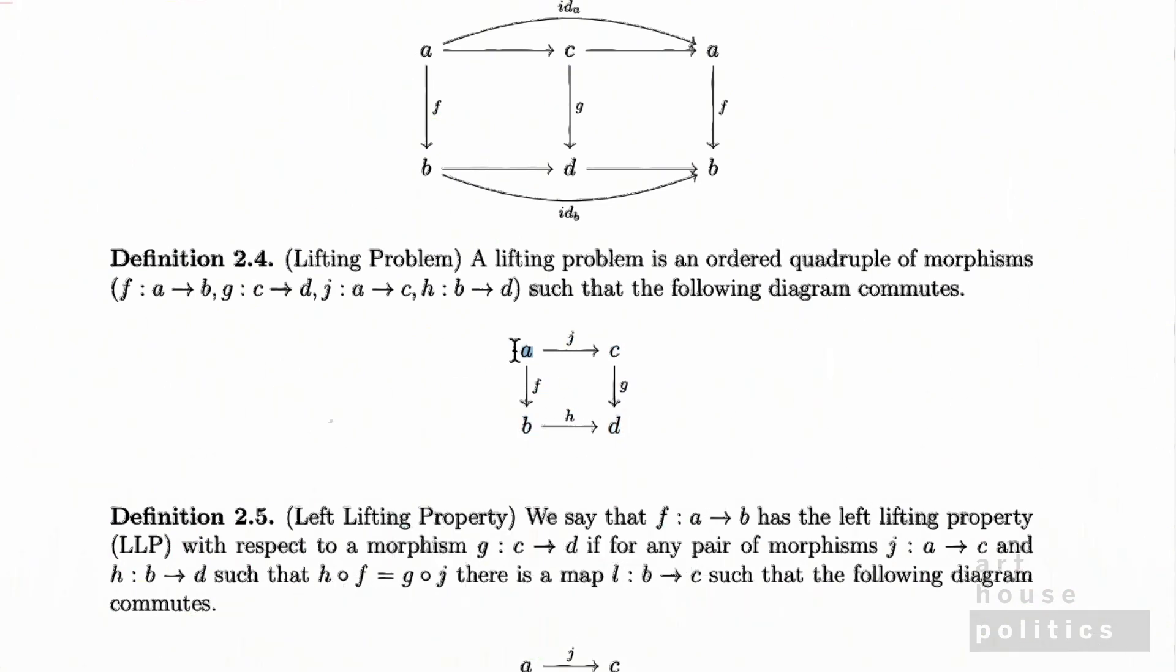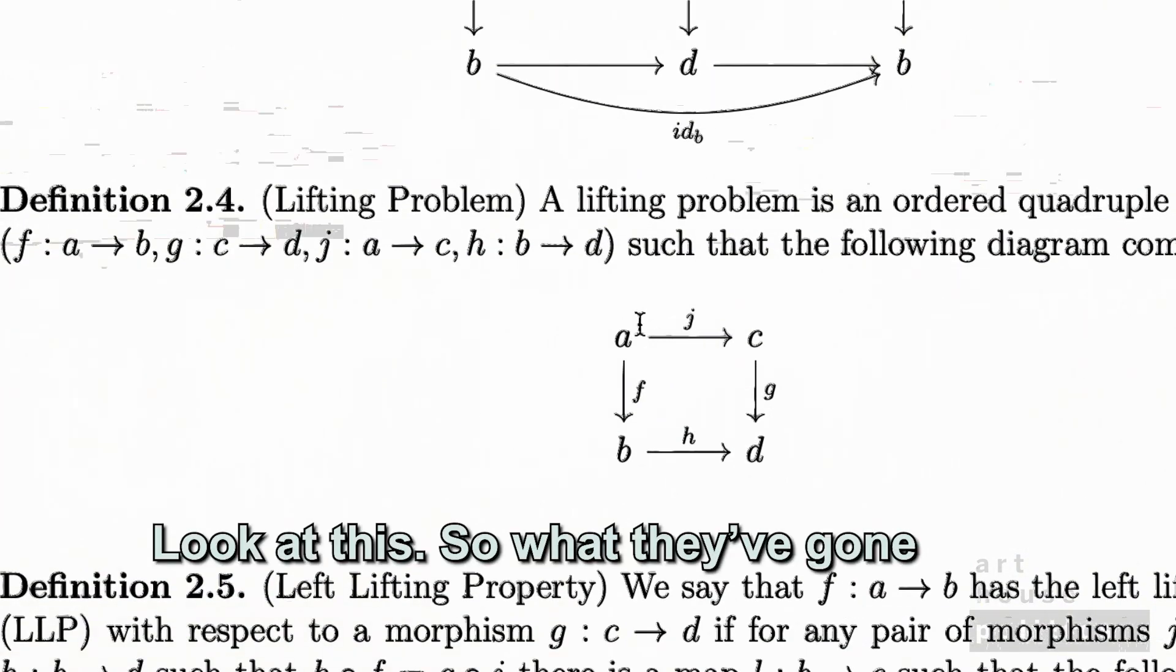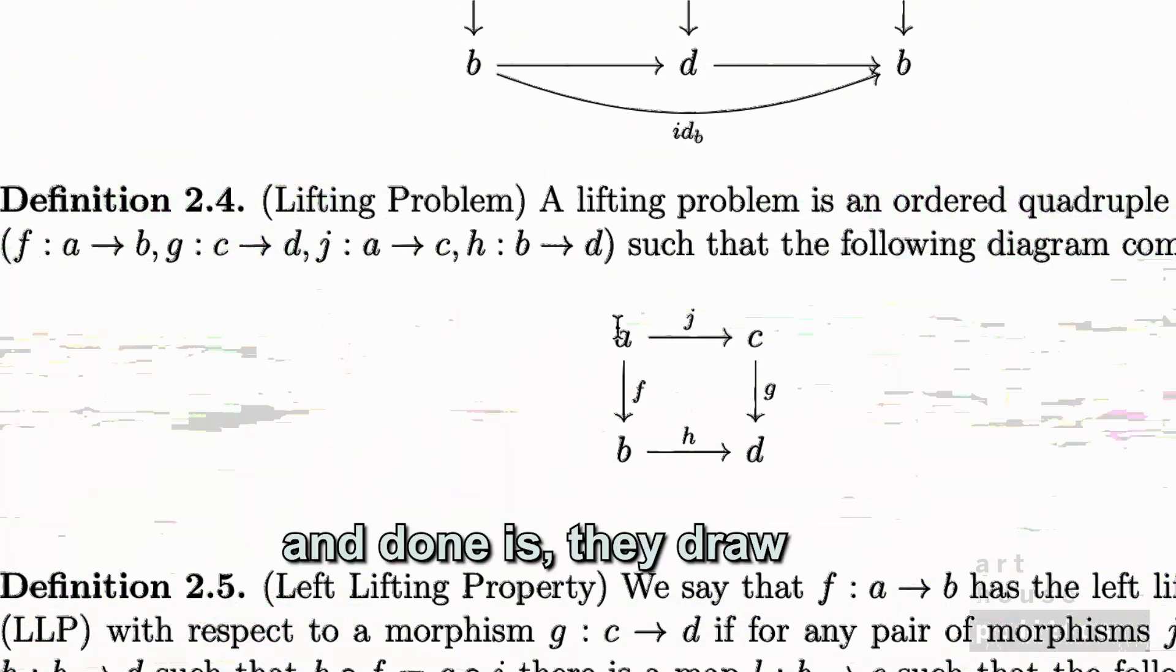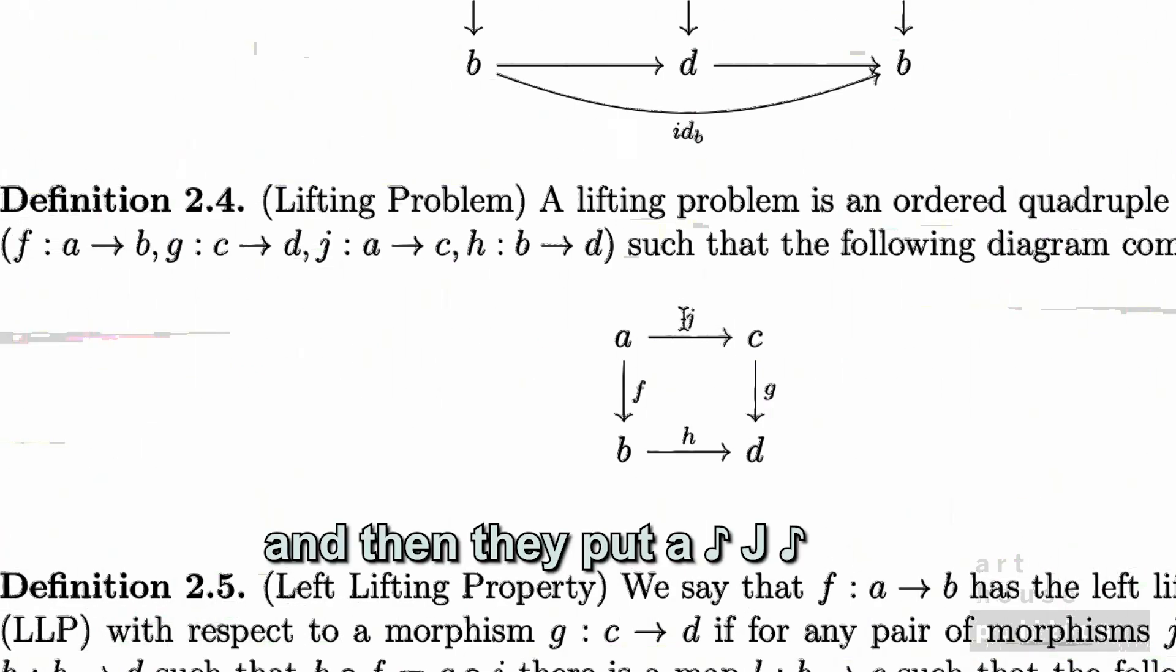This one really gives the game away. Can we zoom in on that? Look at this. So what they've gone and done is they drew a square, and look at this, A, B, C, D, skip the E, F, G, H, skip the I, and then they put a J.